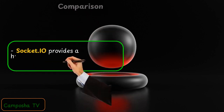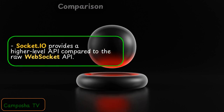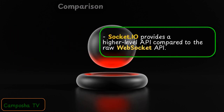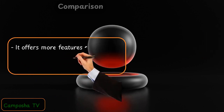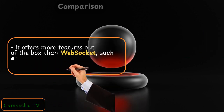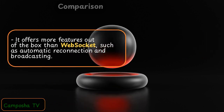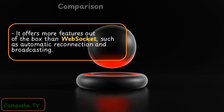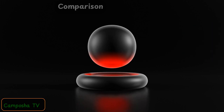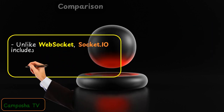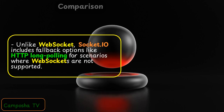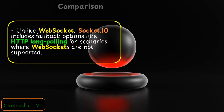Socket.io provides a higher-level API compared to the raw WebSocket API. It offers more features out of the box than WebSocket, such as automatic reconnection and broadcasting. Unlike WebSocket, Socket.io includes fallback options like HTTP long polling for scenarios where WebSockets are not supported.